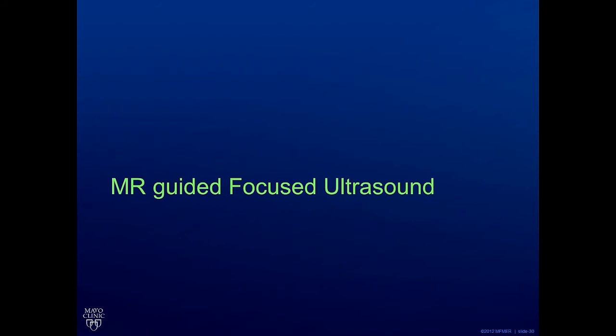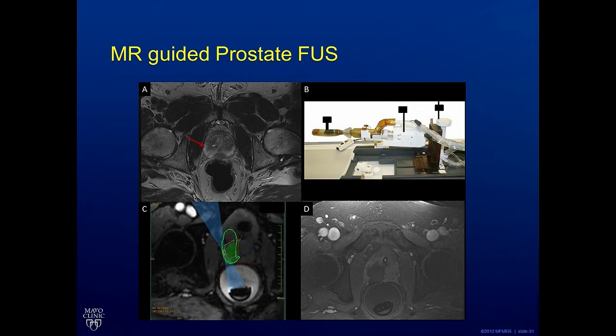MR-guided focused ultrasound is another modality which we brought into play for prostate cancer. In this particular case, the cancer was located on the right side. The ultrasound transducer is placed in the rectum. Here we have planning images showing that we have targeted the right side of the prostate, and then the focused ultrasound steps through treating the tissue, with the MRI showing the tissue heating up. The final result with contrast shows a nicely treated right side of the prostate.